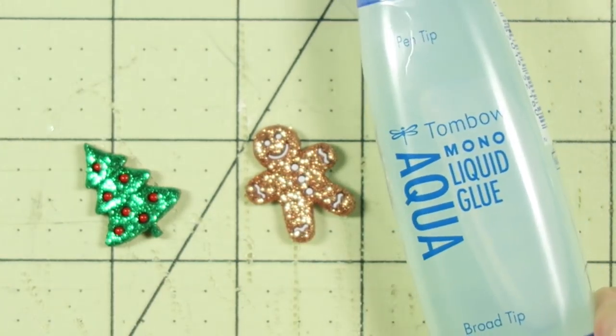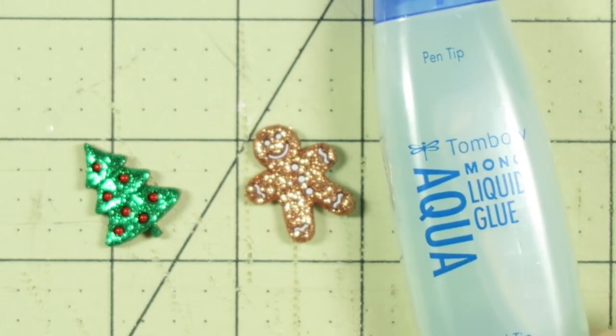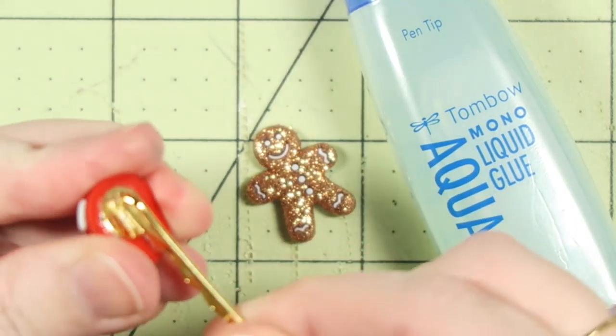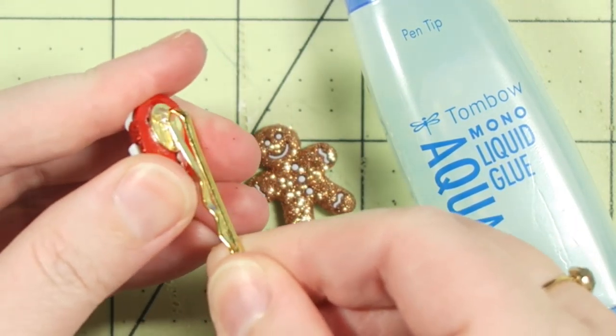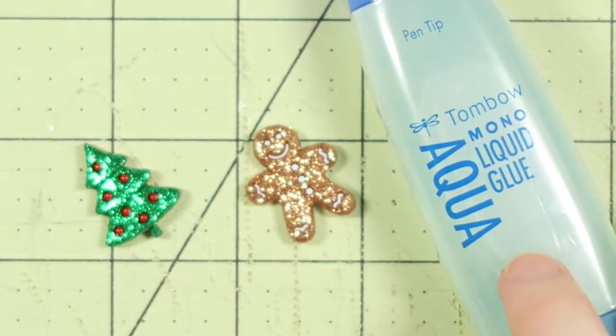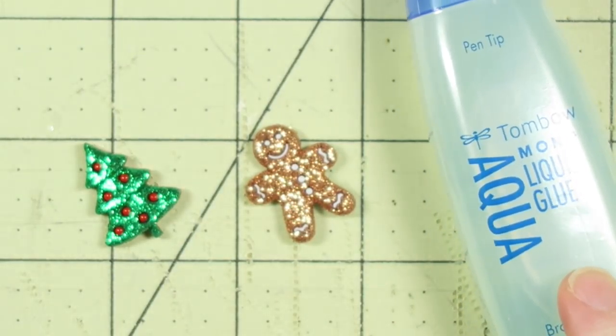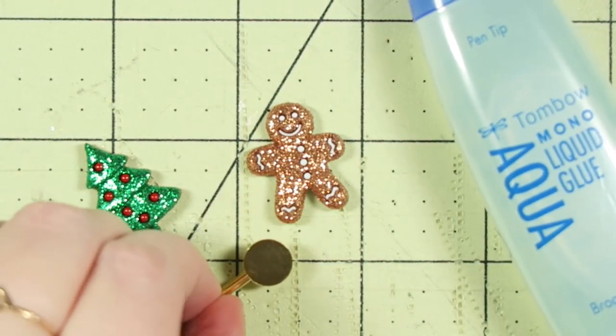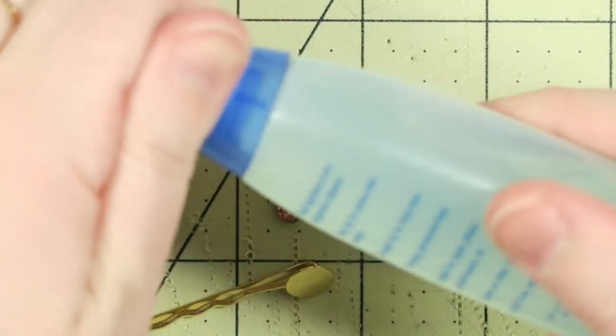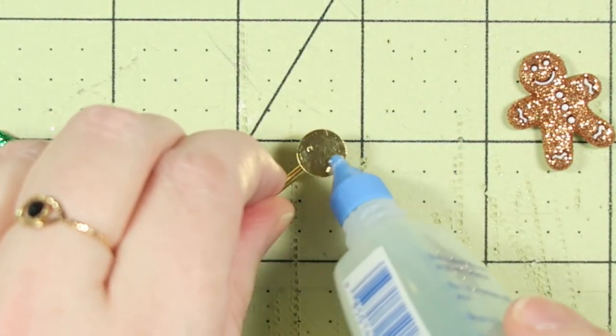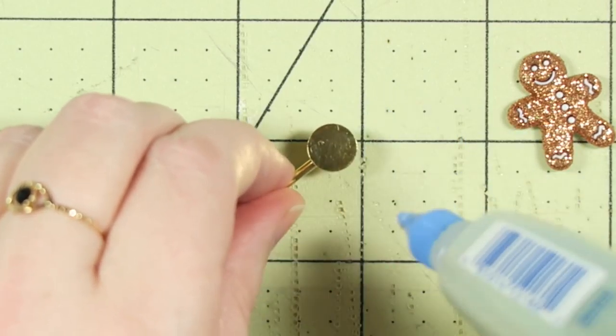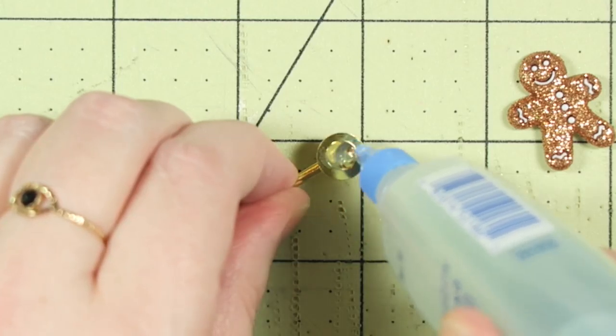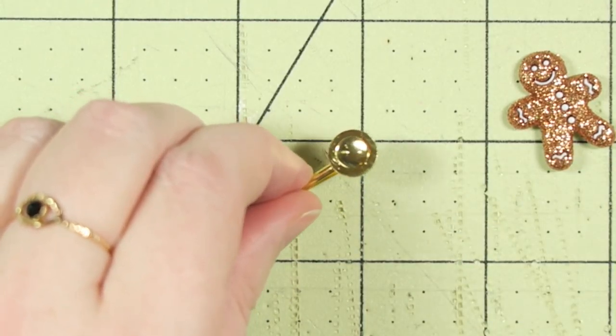All right, so to get started, you will need the Tombow Mono Aqua Liquid Glue. This glue is really great for this project and it does not budge. The little things do not come off. So I definitely recommend this adhesive for this project. So I had zoomed you guys in quite a bit just so you can see exactly what it is that I'm doing.